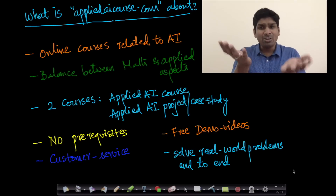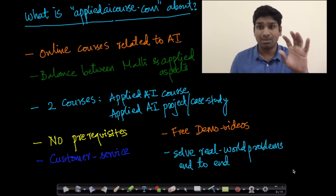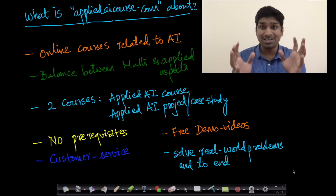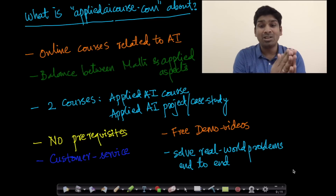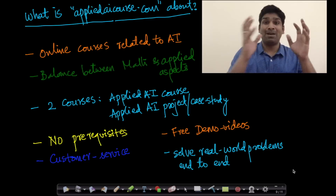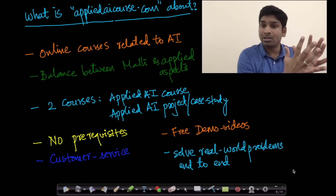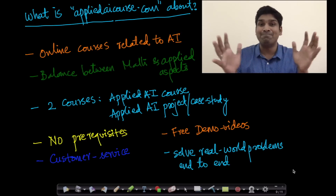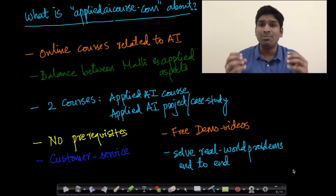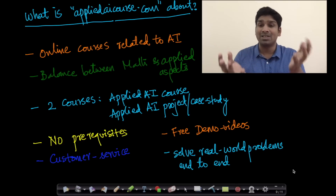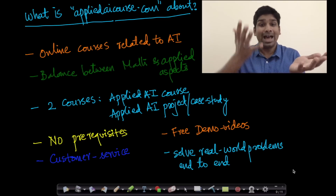In this course we try to find a balance between mathematical rigor and the applied aspects. As the name suggests, this course is all about helping students and course participants solve real-world AI problems end-to-end. There are some AI courses online which take either the pure mathematical route or just the programming route; we want to find a balance between both, because applying AI to real-world problems requires understanding of both mathematical concepts and applied aspects.